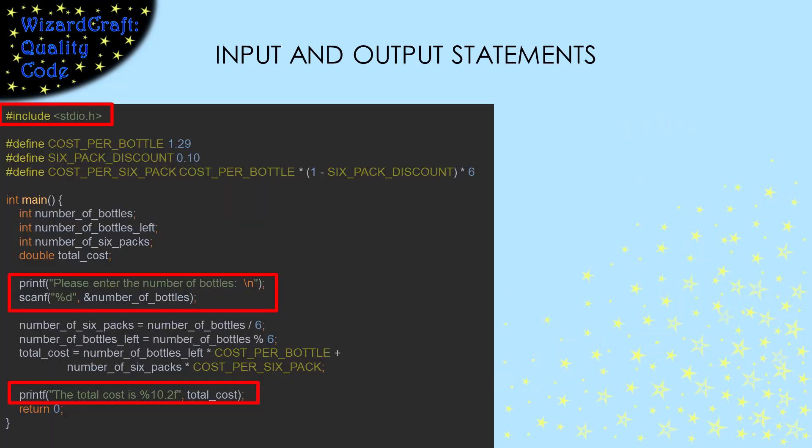Printf and scanf are the functions that we use to output data to the screen and to get input from the user through the keyboard. To use them, you have to include stdio.h. Let's look at their parameters and how you use them to control your IO.